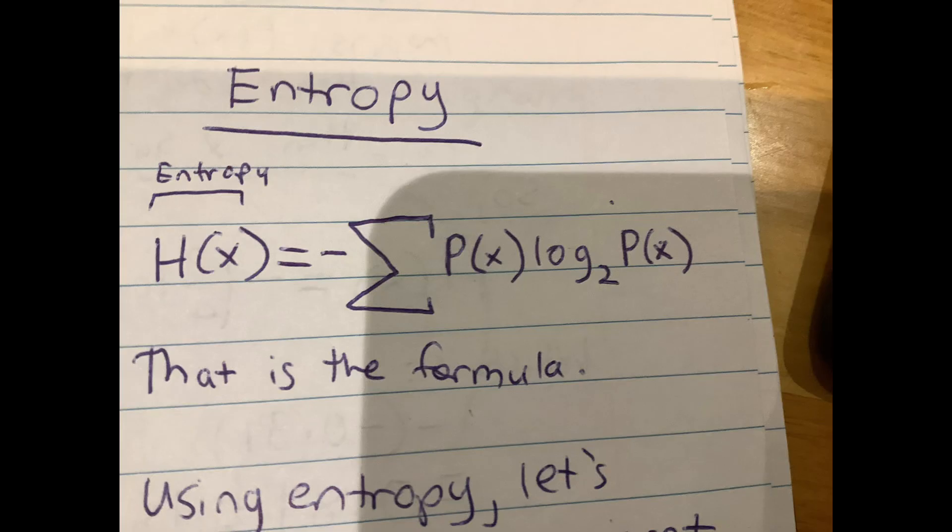So taking a look at the entropy formula, it's the sum of the bit formula again for the probability value, and then it's times by the probability. So that's what I mean when I say weighted, because you weight the bit formula of all values of probability with the probability itself.